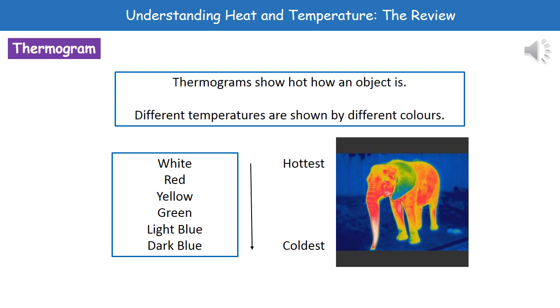You do need to remember the colors there, so whites, reds, yellows, they're the warm ones. And then the greens, light blues, dark blues are the colder temperatures. So just remember that different colors represent the different temperatures and the name of that image is a thermogram.